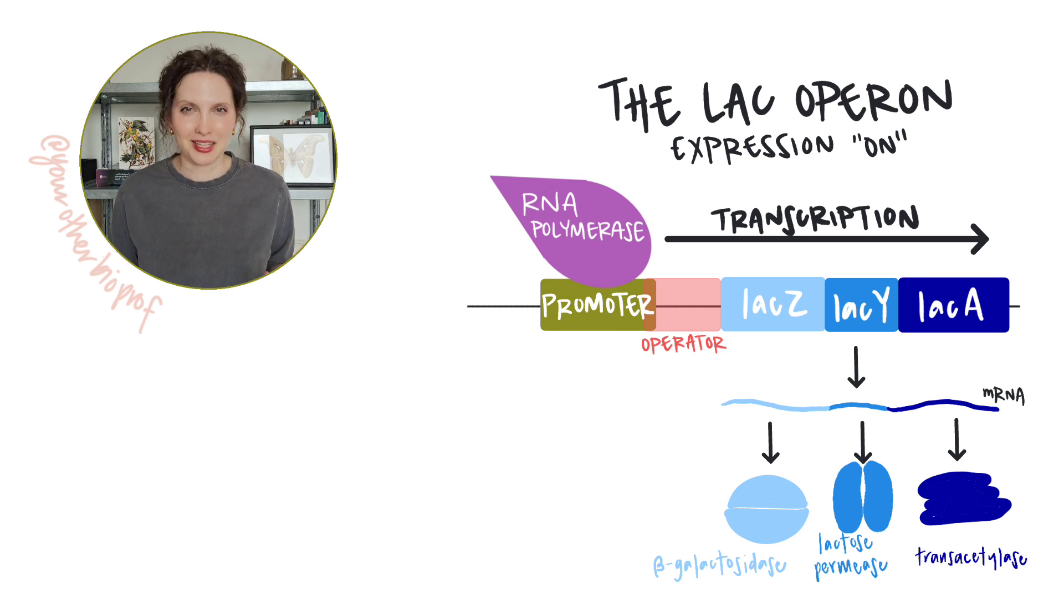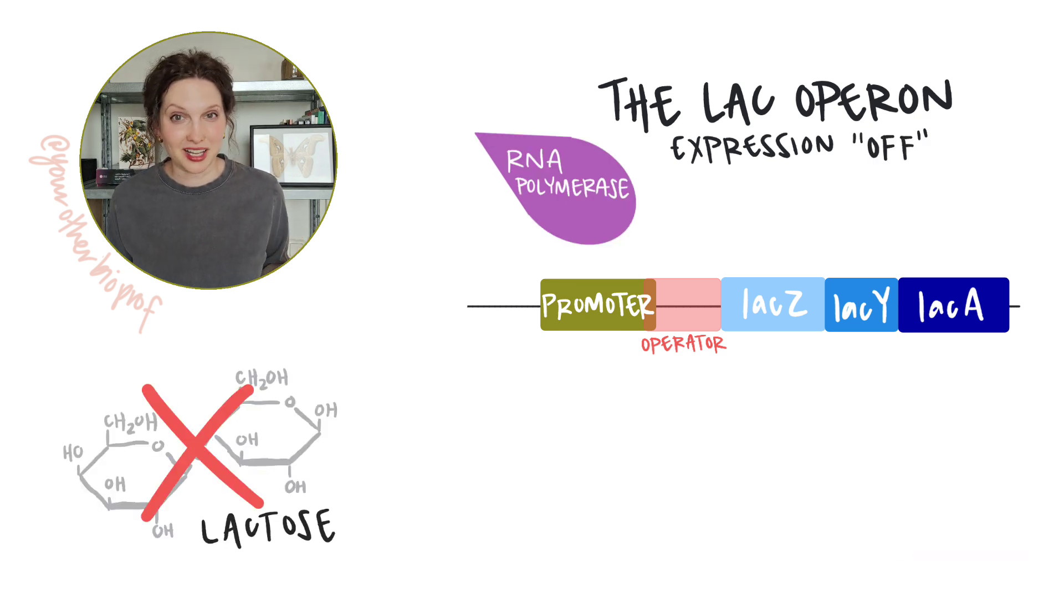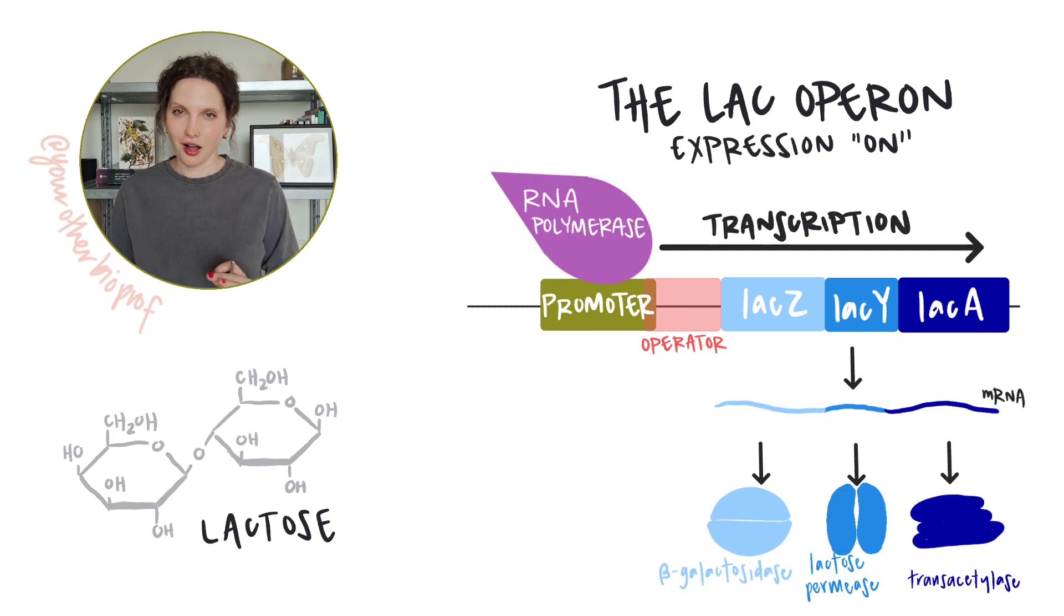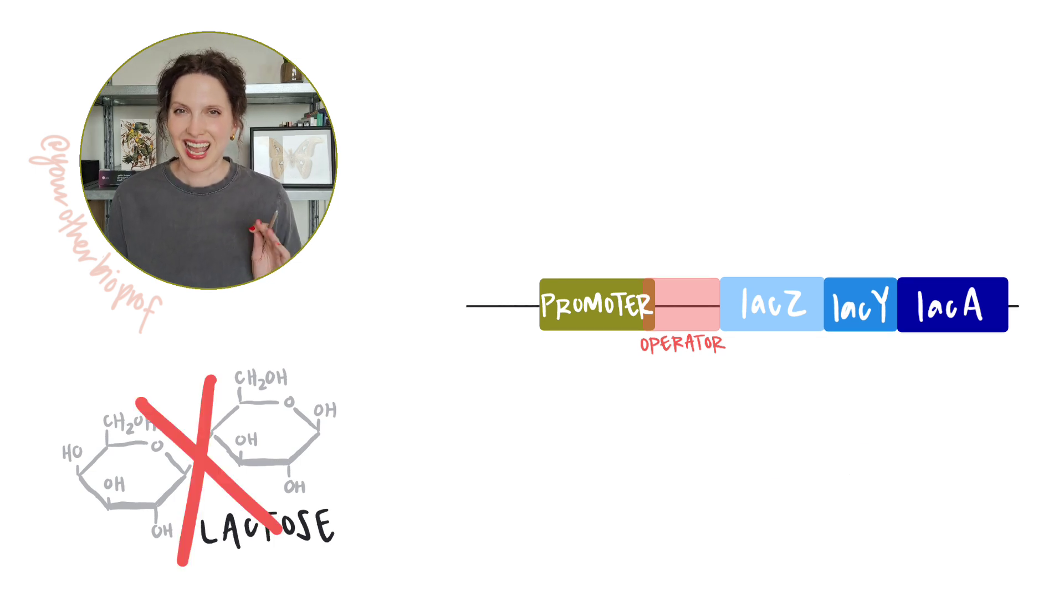When would the cell not want to make the lactose metabolizing enzymes? When there's no lactose around to metabolize. So the cell regulates or controls transcription based on a condition, lactose availability. No lactose available, no transcription, no production of the structural gene enzymes. So for now, let's say that expression, transcription of the lac operon, is off when lactose is not available and on when lactose is available, right? It's the lac operon, and lactose turns it on. But how?